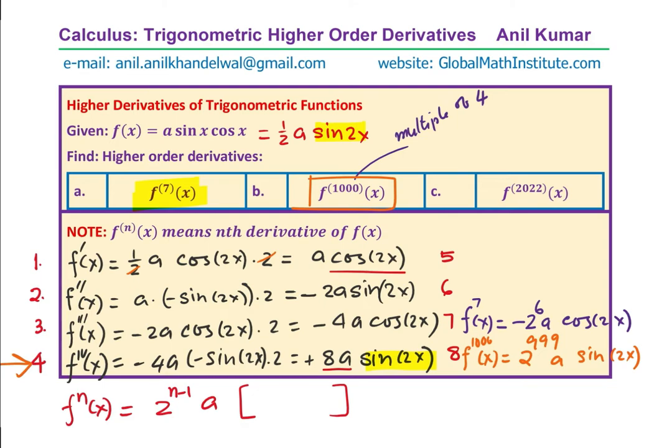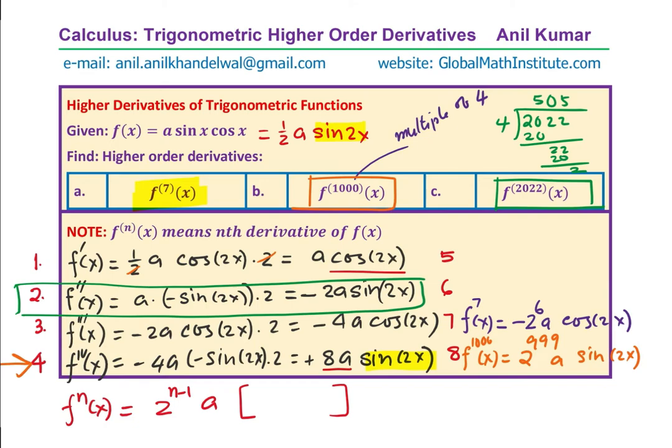How about the other one, which is 2022? Now 2022, if you divide by 4, then what do you get? 4 times 5 is 20, and this is 2 and then you bring down another 2, 4 times 5 is 20. You get a remainder of 2, that means second. We call this as a mod 4 function. That is going to be similar to the second derivative. And so f^(2022) will be, here we get minus 2 to the power of 1 less power, 2^2021 A and sin 2x. Do you see how we have worked out all the derivatives after finding the first 4 since the pattern repeats.